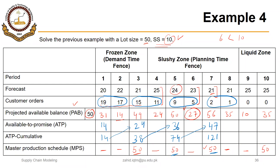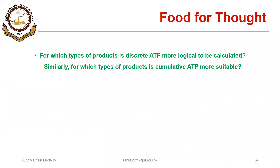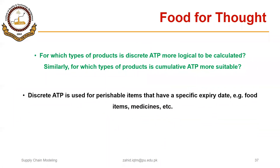That is generally the case — make-to-stock organisations generally do have some amount of safety stock, but make-to-order organisations generally don't carry safety stock. So for which types of products is discrete ATP more logical to be calculated? Discrete ATP is used for perishable items that have a specific expiry date, for example food items, medicines, etc.